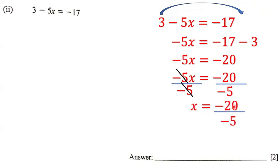Now -20 divided by -5 is positive 4, and so the answer to this linear equation is x = 4.